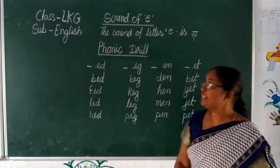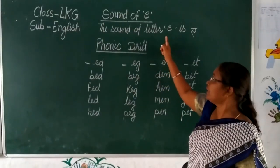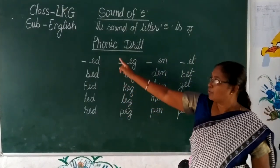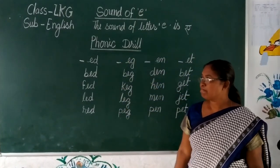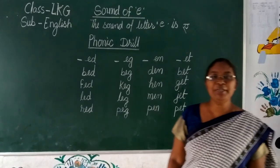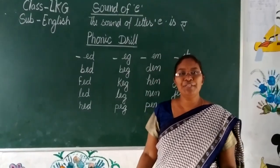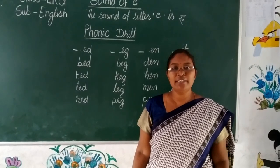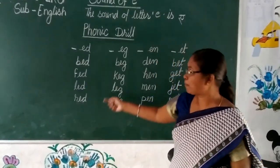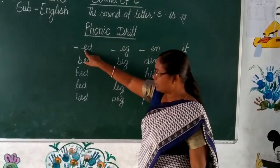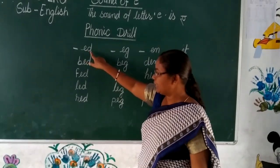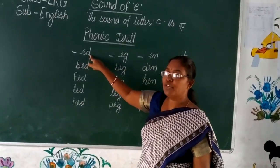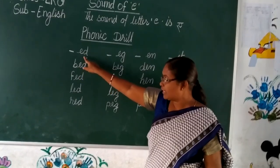The phonic sound of letter E is 'eh'. Phonic drill — phonic drill means how we speak and how we read the words. Here is E. The phonic sound is 'eh'.